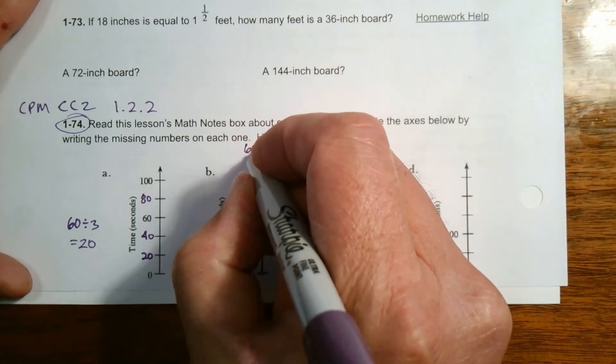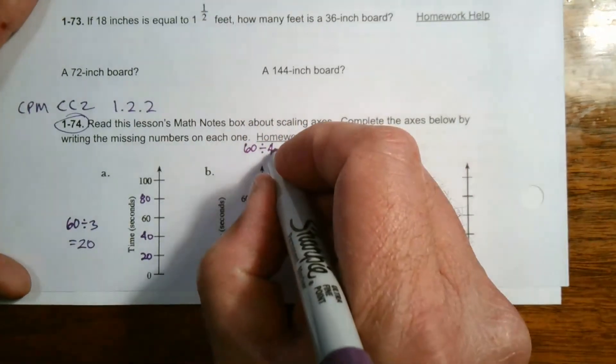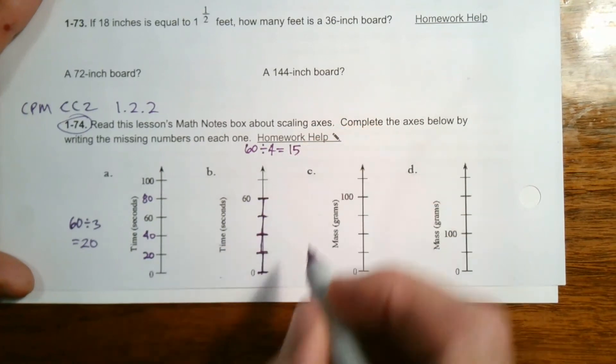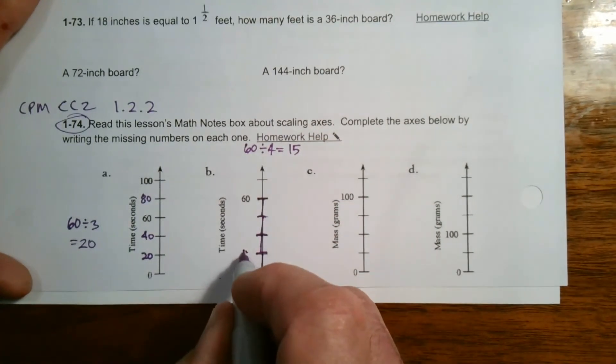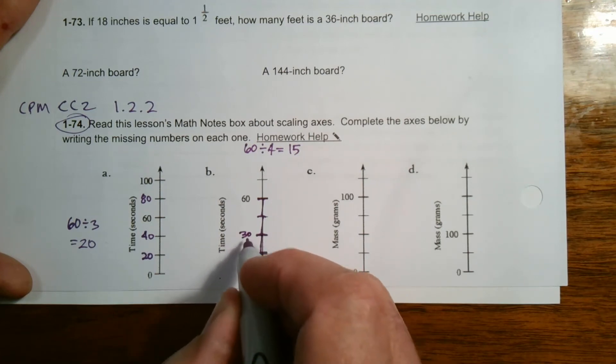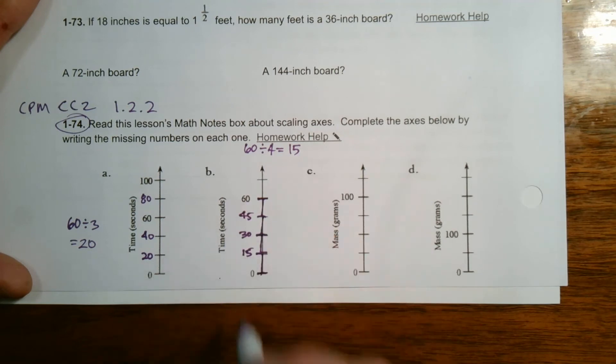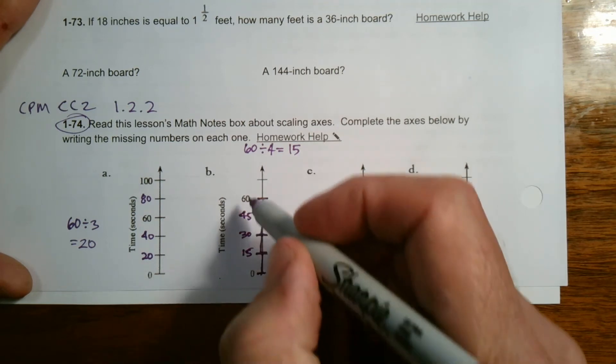So again, I'm going to take 60 and this time I'm dividing by four. 60 divided by 4 is equal to 15. So they're going up by 15. So that first one is 15, zero to 15. Add another 15 makes it 30. Add another 15, now I'm at 45. Add another 15, there I'm at 60. So it's 15s each time.